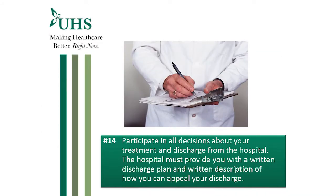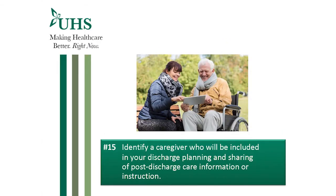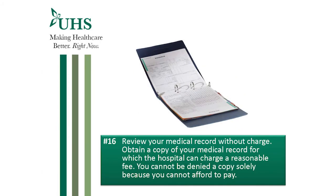You have the right to participate in all decisions about your treatment and discharge from the hospital. The hospital must provide you with a written discharge plan and a written description of how you can appeal your discharge, as well as identify a caregiver who will be included in your discharge planning and the sharing of post-discharge care information or instruction. You have the right to review your medical record without charge and to obtain a copy of your medical record, for which the hospital can charge a reasonable fee. You cannot be denied a copy solely because you cannot afford to pay.